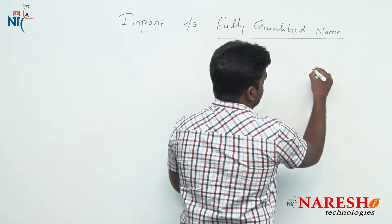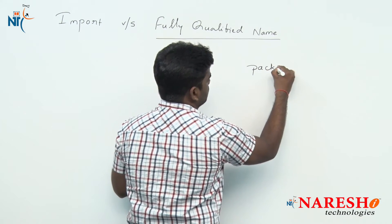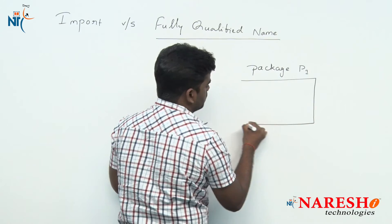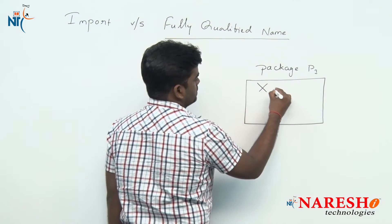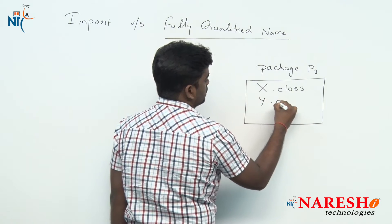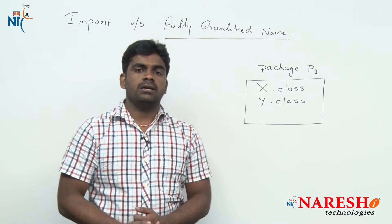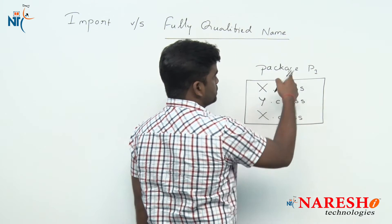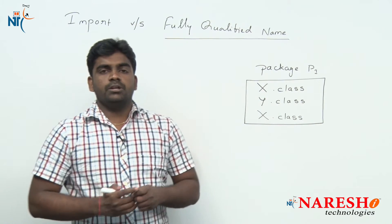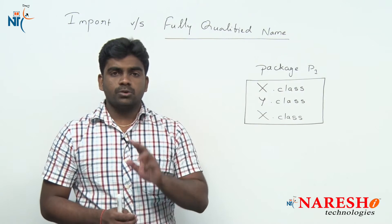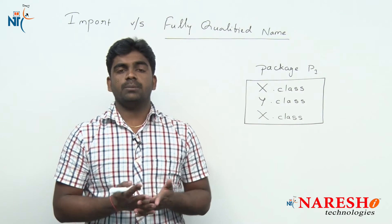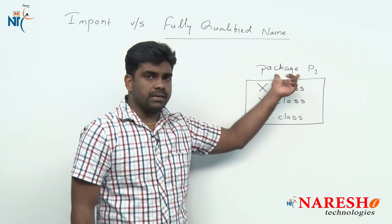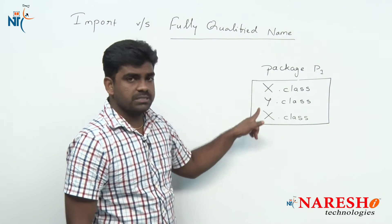Suppose you take one package — a package is a folder. In package p1, I have two classes: class X and class Y. Now, can we place one more X class inside the same package? Impossible. Just like in your computer you cannot place the same file twice in one folder, inside a package it is not possible to place two classes with the same identity.